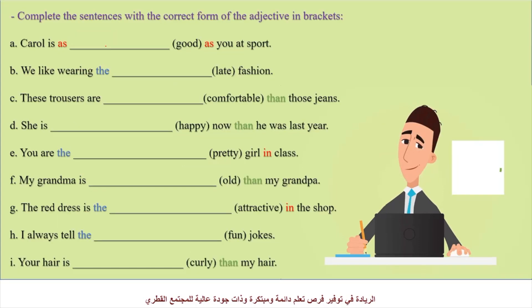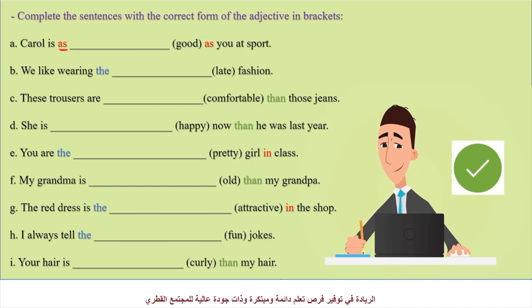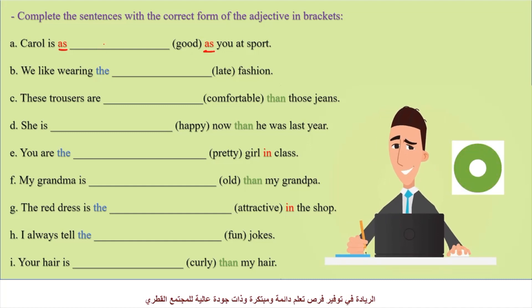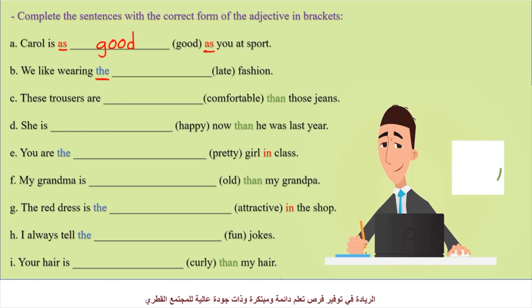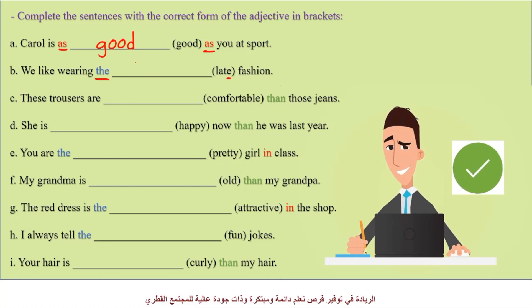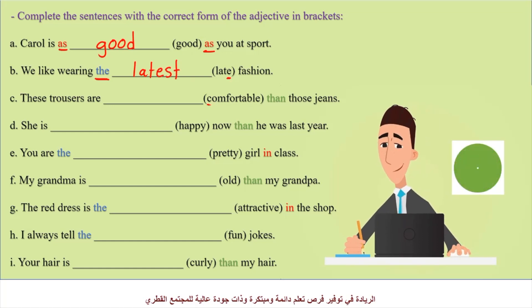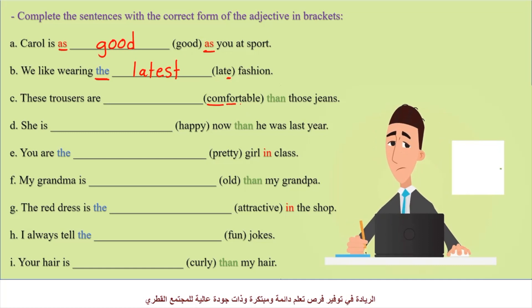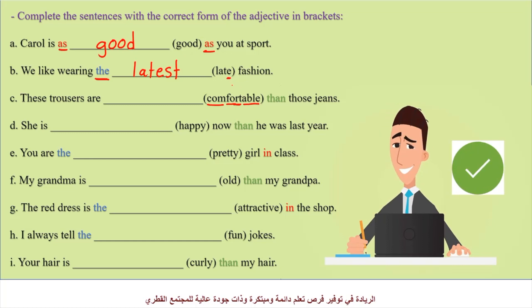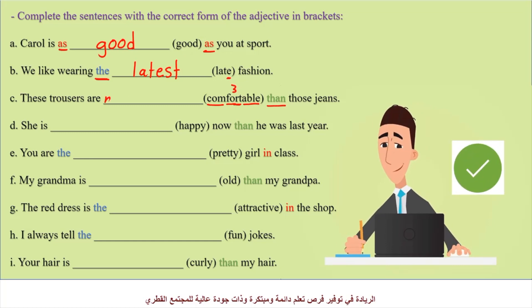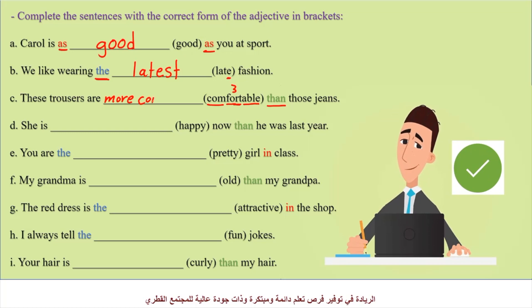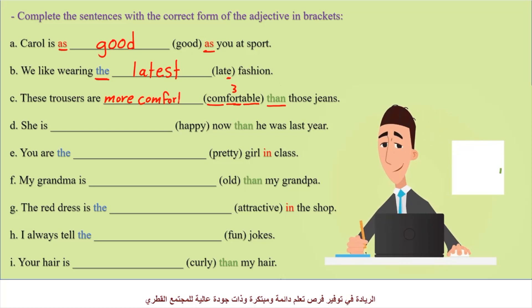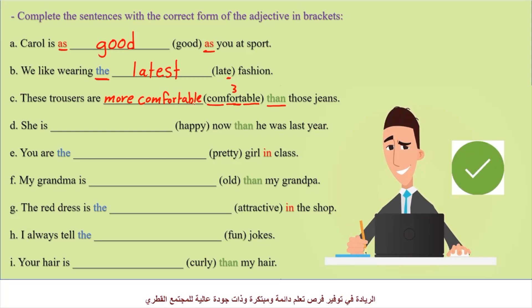Now let's fill the gaps. Here we have AS...AS, which means we write the adjective as it is: as good as. The next item uses the superlative — late ends with E, so we add ST only. The word comfortable is a three-syllable adjective; since we see THAN, we write MORE: more comfortable than.